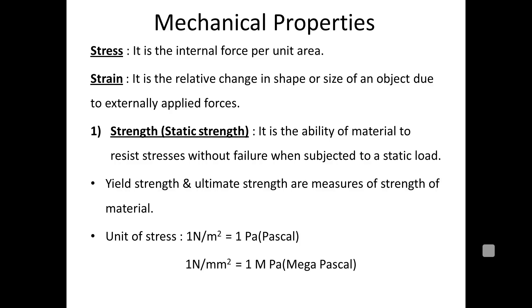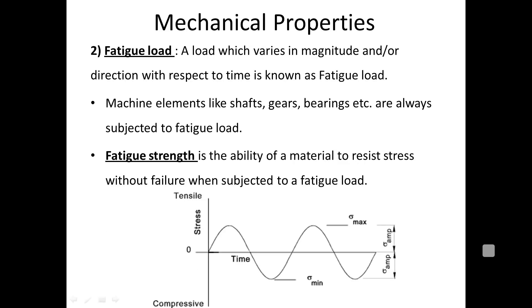Next, strength — the ability of a material to resist stresses without failure. If the load is static, it is static strength. If it is a cyclic load, it is fatigue strength. Fatigue strength is very important for components like shafts and bearings, where components are subjected to fatigue loading. When the load varies with respect to time in magnitude as well as direction, that is called a fluctuating, cyclic, or fatigue load.